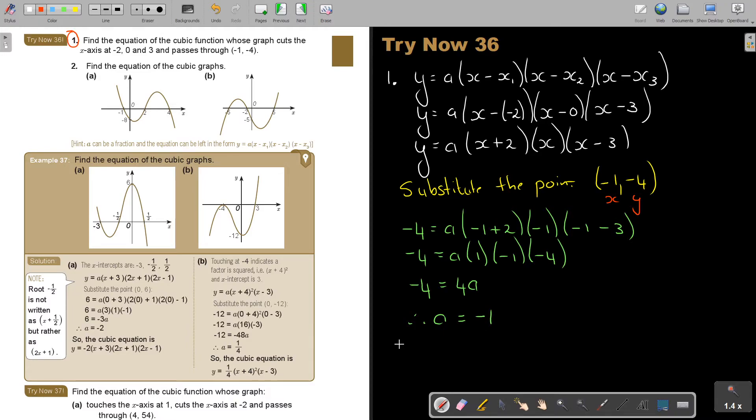So therefore, y is equal to negative 1. So I'm putting it in there, in the place of a. Okay. So y equals, and then it's x plus, oh, I just want to show you. If there's an x on its own, it's always good to first write that x. And then x plus 2, x minus 3. Okay.